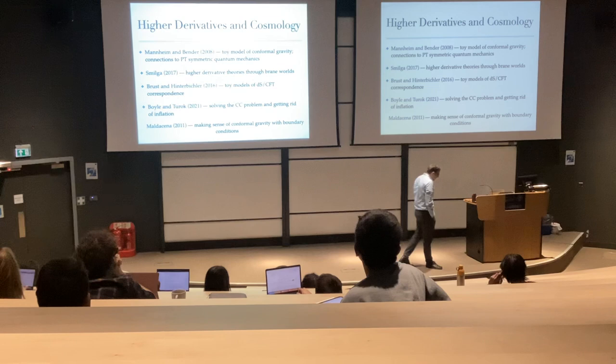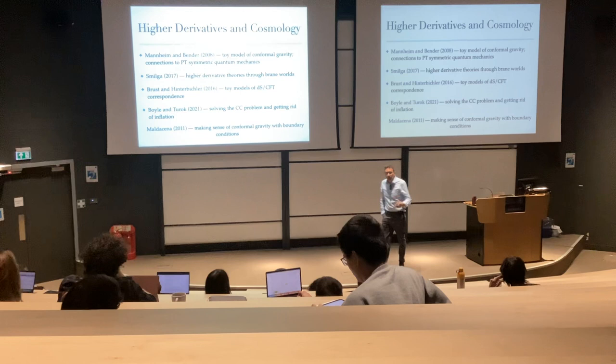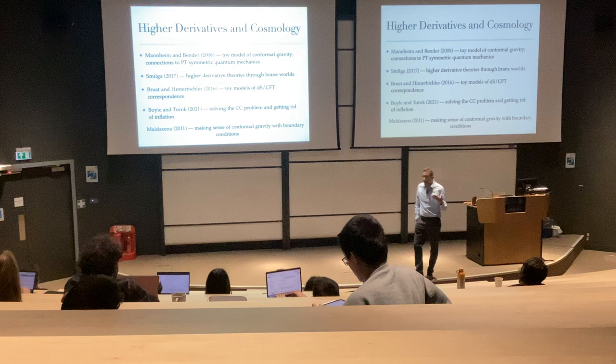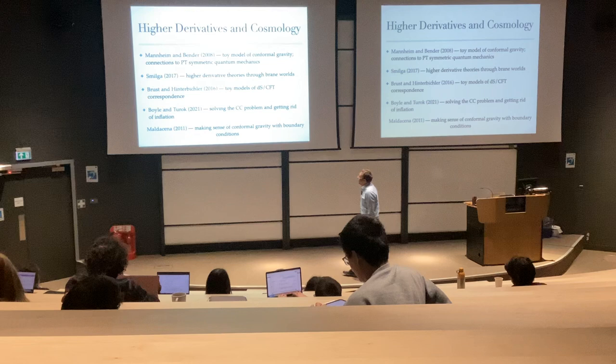Philip Mannheim is a guy from Connecticut who for a long time has been advocating something called Weyl gravity. He replaced the Einstein-Hilbert action with Weyl parameters squared, and he's very excited about this as a way of explaining problems of the universe like dark energy and dark matter. But when you do that, you have higher time derivatives in your action, and you introduce problems like non-unitarity, ghosts, and a negative-norm spectrum.